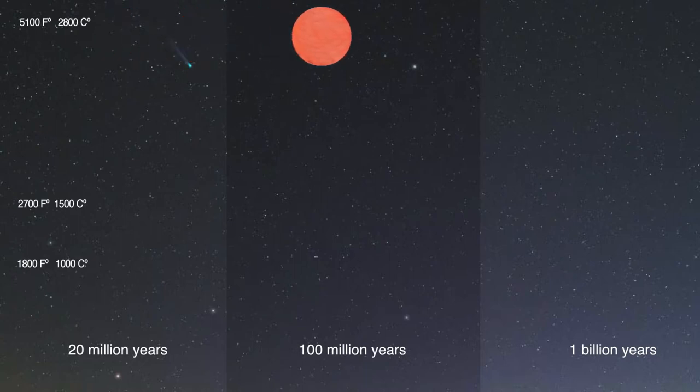After 100 million years, it would have cooled to about 2,700 degrees Fahrenheit, or 1,500 degrees Celsius, with silica clouds condensing out in its atmosphere. At a billion years of age, it would have cooled to about 1,800 degrees Fahrenheit, or 1,000 degrees Celsius, so cool that methane gas and water vapor would dominate its appearance.